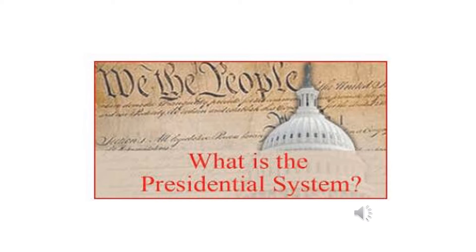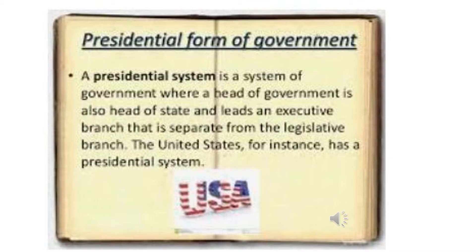The United States of America has adopted the Presidential System of Government. Under the Presidential Form of Government, the Legislature and the Executive are not directly dependent on each other. The houses of Legislature and the President are elected directly by the people. The President is the Executive Head and has a lot of powers, including the power to implement laws. The Legislature and the Executive keep a check on each other, and this mutual control can lead to a responsible government.